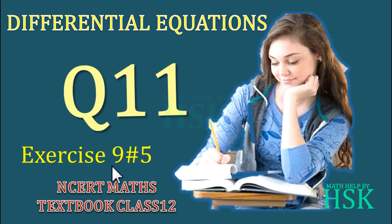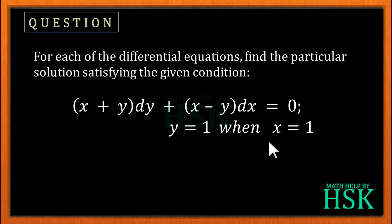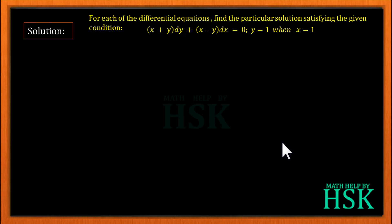Taking question 11 of exercise 9.5 from the chapter differential equations. The question is: for each of the differential equations, find the particular solution satisfying the given condition. We have been given this differential equation and we have to find its particular solution under the given condition. First of all, we have to check whether this equation is homogeneous or not.